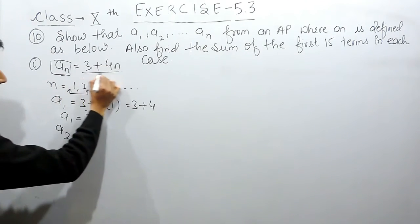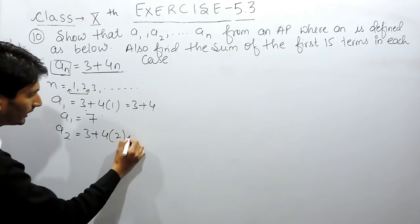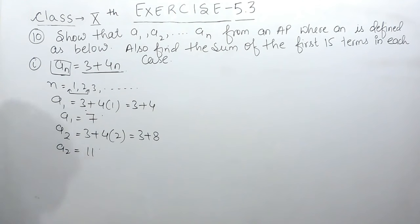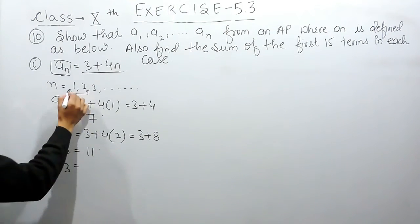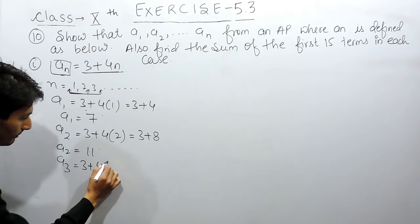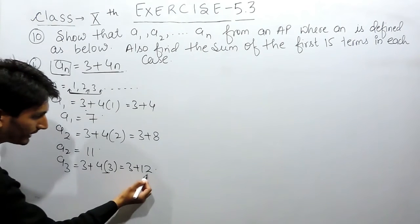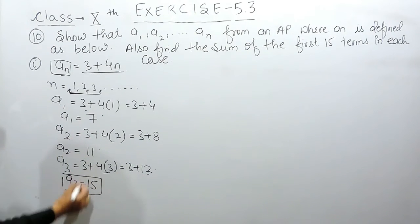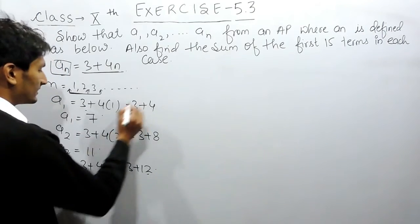The value of the second term will become 3 plus 4 into 2, which is equal to 3 plus 8, and the value of a2 will become 11. Similarly, if I consider the value of n as 3, the value of a3 will become 3 plus 4 into 3, which is equal to 3 plus 12, so the value of a3 will be equal to 15. These values can be calculated so on.